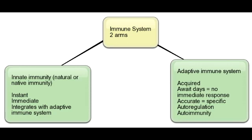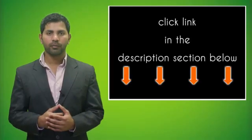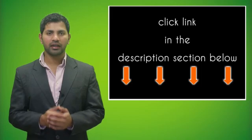What are all the components of adaptive or acquired immunity? The components of adaptive or acquired immunity include T-cells, B-cells, and circulating antibodies. For more information on this topic, click on the link in the description section below.